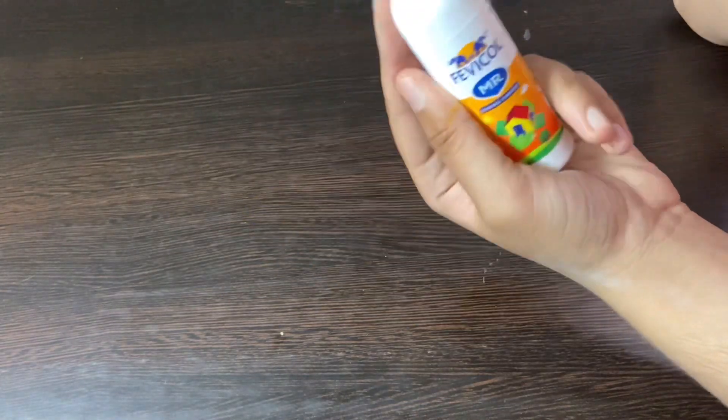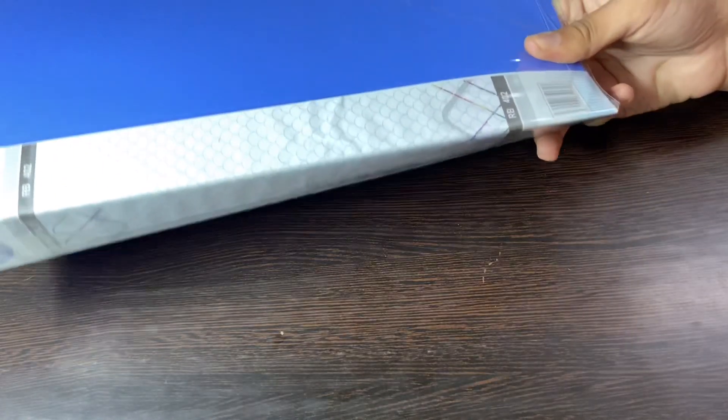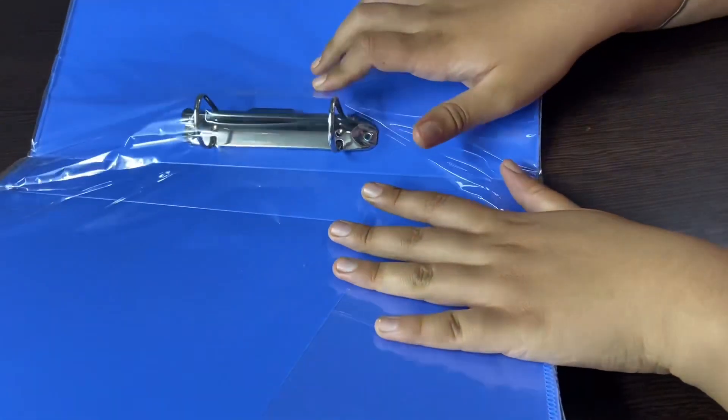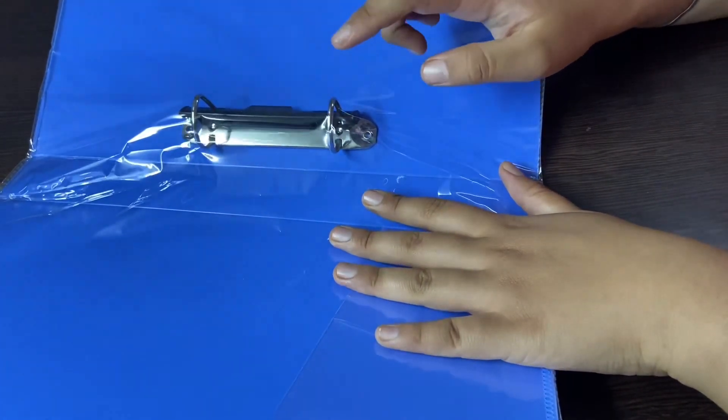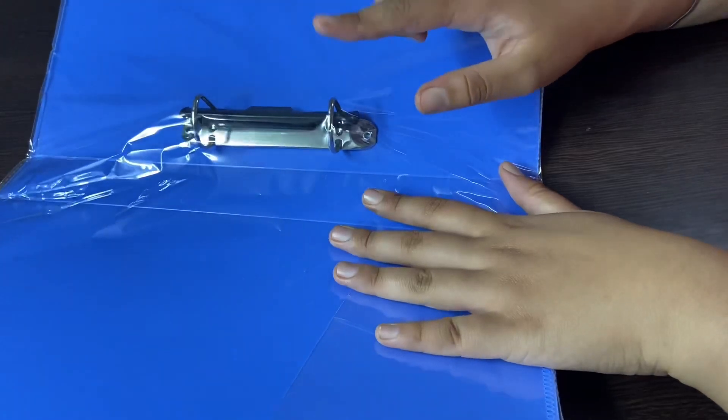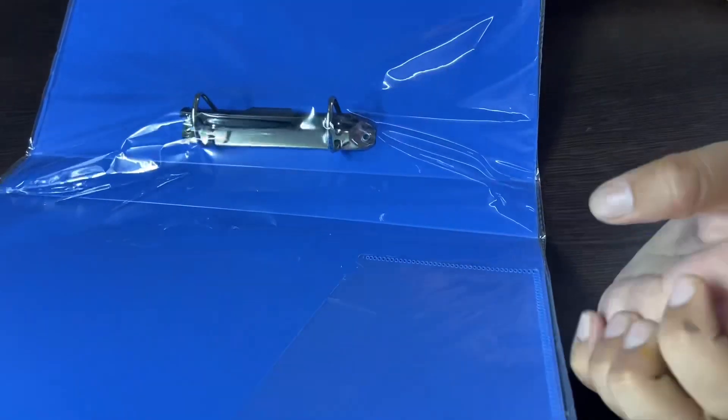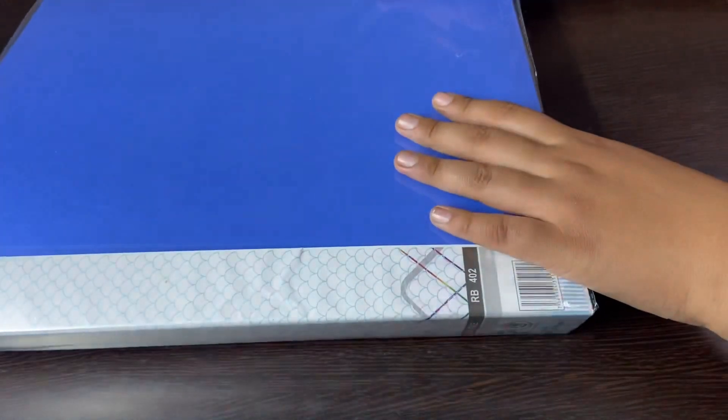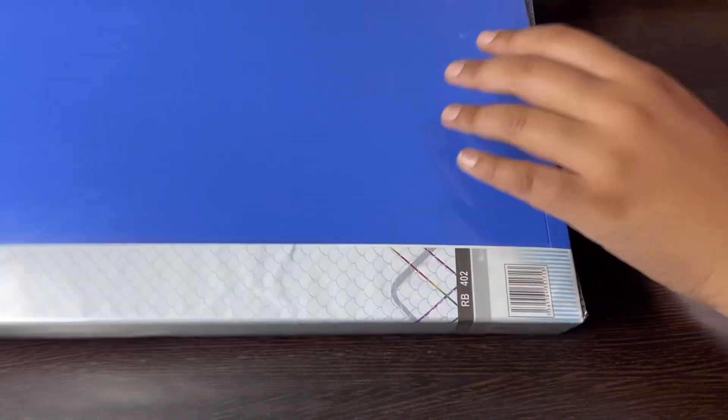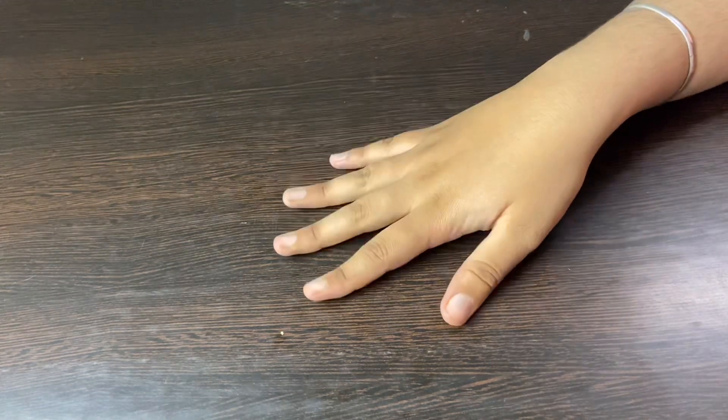Next, I got this basic Fevicol, obviously for pasting stuff. Then I got this ring binder to store my notes. If you guys want to buy anything to store your notes, I would recommend a ring binder rather than a basic binder because it's easier to store your notes in this. I think this cost me around 80 rupees, which is not that much because it will last you years.